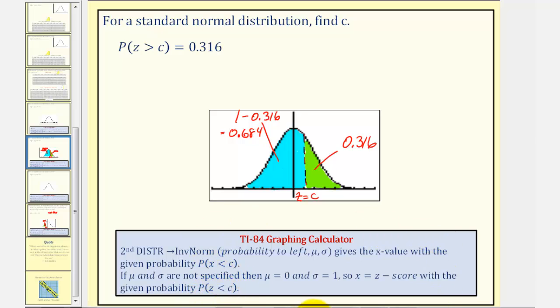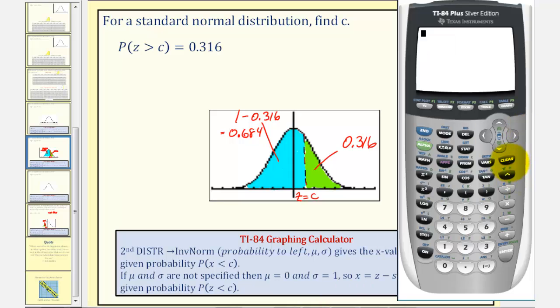So now we'll go to the graphing calculator. We'll press second, VARS for the distribution menu, option three, and then we'll enter the area to the left, or the probability to the left, which is 0.684. Close parenthesis and enter.